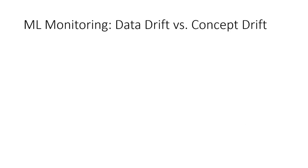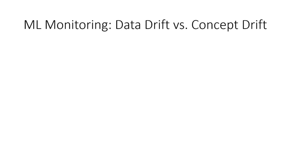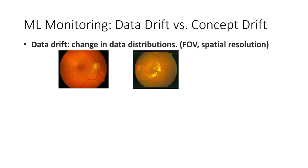First, let's understand some of the metrics here — data drift versus concept drift. Consider that you already have a machine learning model trained on images from camera A. You might need to detect a change in data distribution. If the underlying data distribution — such as the field of view or spatial resolution — changes significantly, so that images don't look at all like what the model was trained on, then a drift can happen.